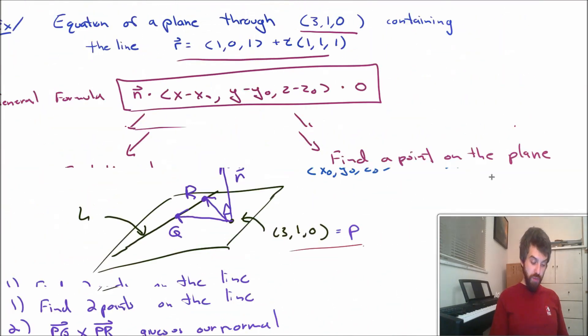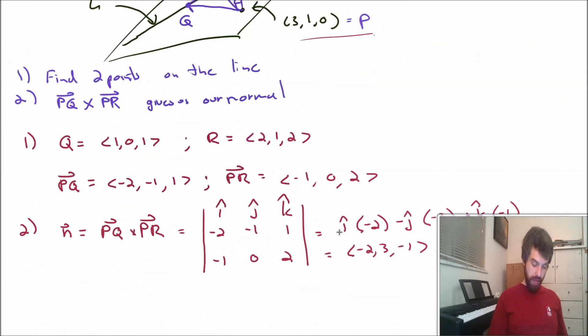Now we have a normal. That was going all the way back to our beginning. What we wanted to be able to do was to plug it into our generic formula. We need to have a point. We knew that from the beginning, the 3, 1, 0. And we need to get a normal. That's what I've done. So now I can plug it back into my general formula and get my equation of my plane.